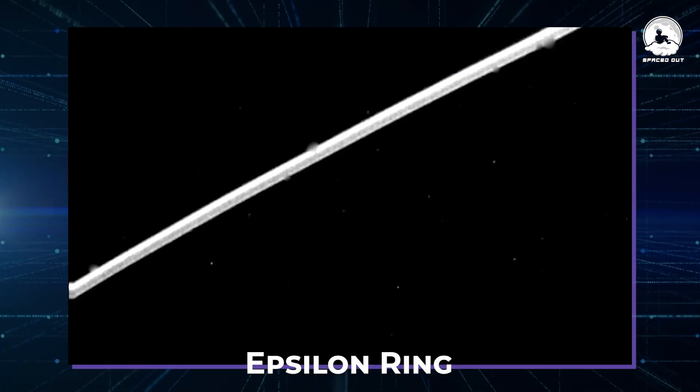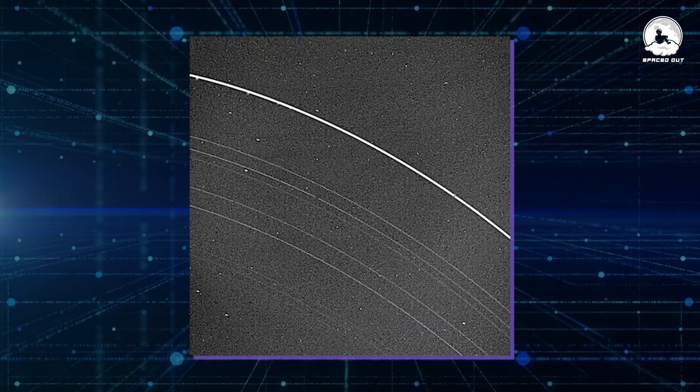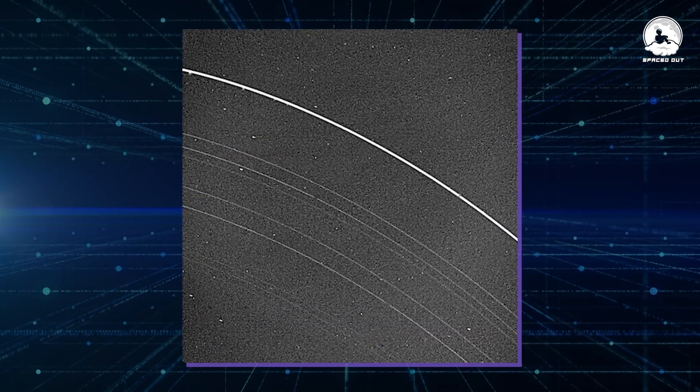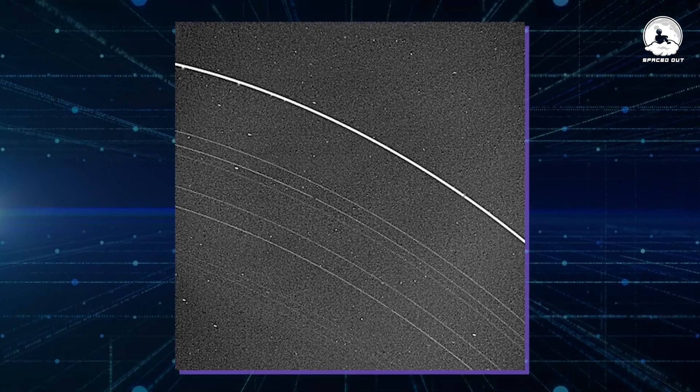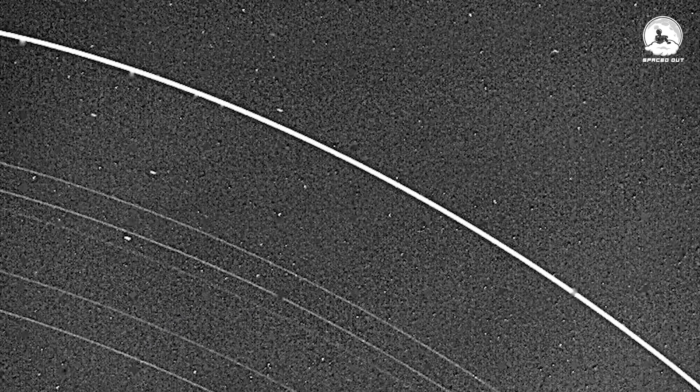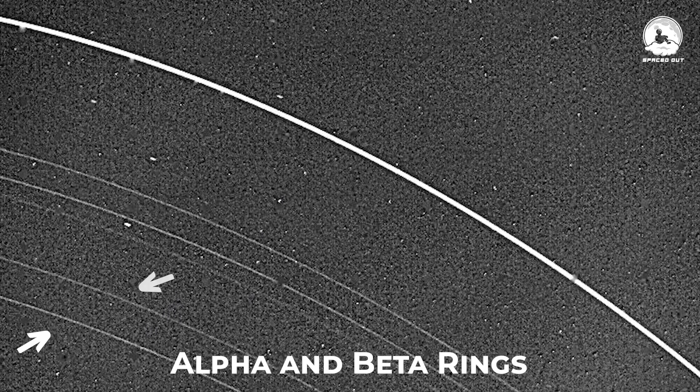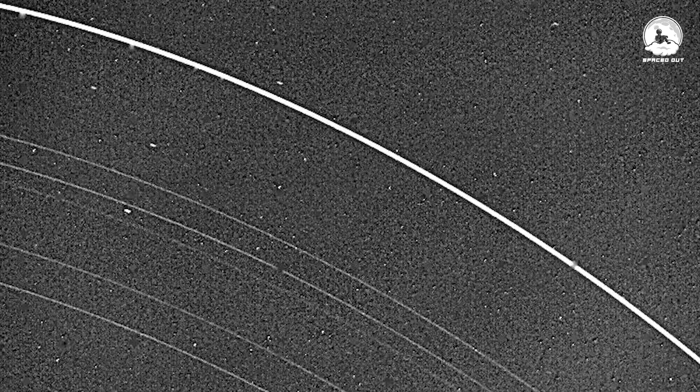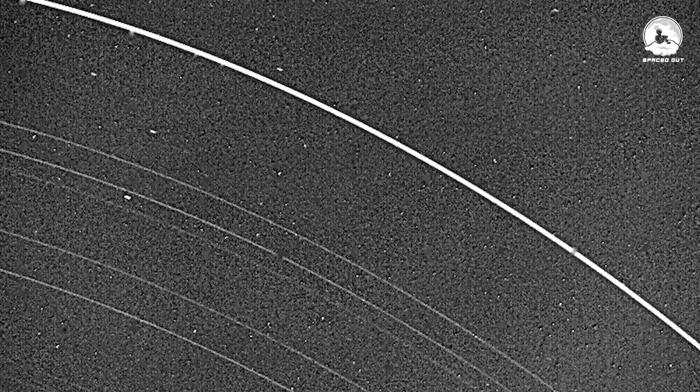Take, for instance, the epsilon ring. It stands out as the outermost and broadest ring, gleaming prominently. Move inward, and you'll spot the alpha and beta rings, which are not only inner, but also the brightest among the bunch.